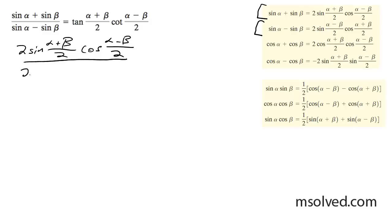And down here, 2 sine (α-β)/2 times the cosine (α+β)/2.